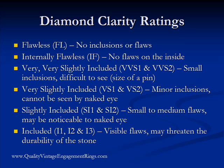Moving along the chart, we have slightly included, which is split into two categories: slightly included one and slightly included two. These diamonds have small to medium flaws that may be noticeable to the naked eye. This is where we start being able to see the blemishes and notice that there are some flaws on the stone without magnification.